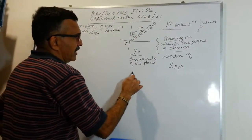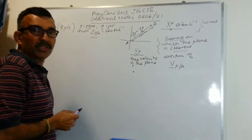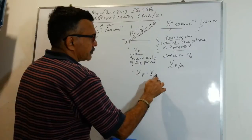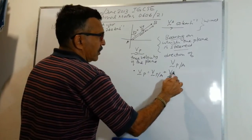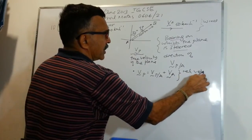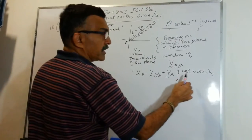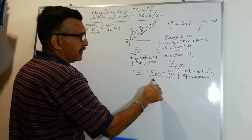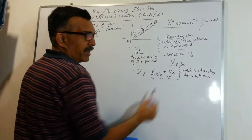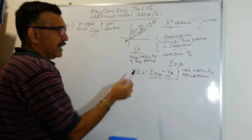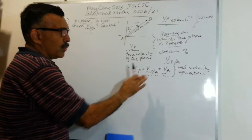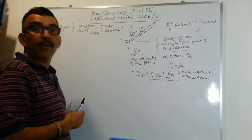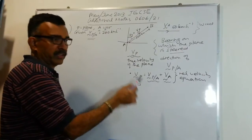We use an important equation — in some books called the relative velocity equation — where the velocity of P relative to A, plus the velocity of A, gives us the velocity of P. Remember, this is all vector addition, so we'll have to draw a vector diagram, what we call a triangle of velocities. V_P is the resultant of these two components.